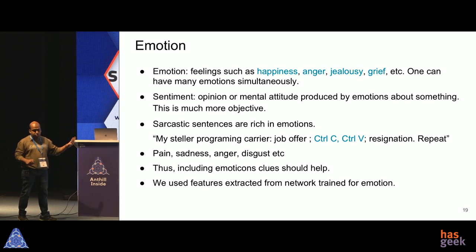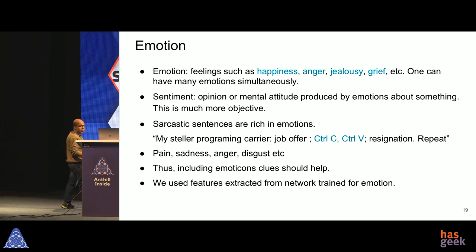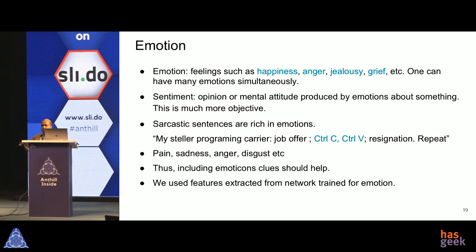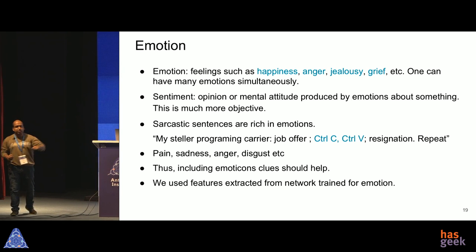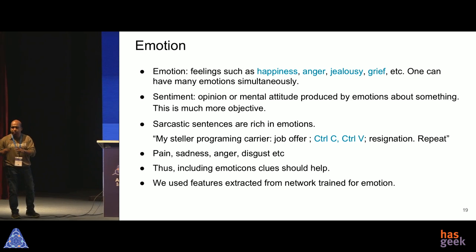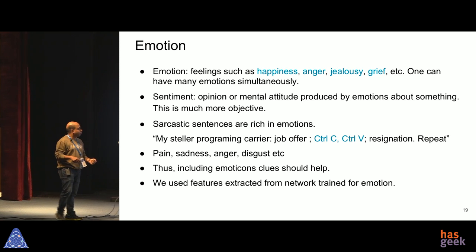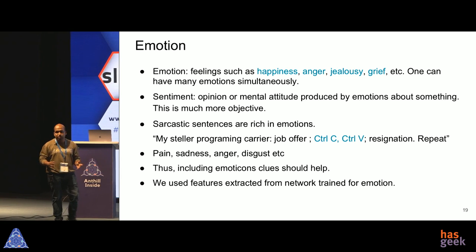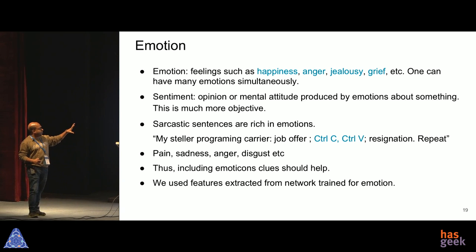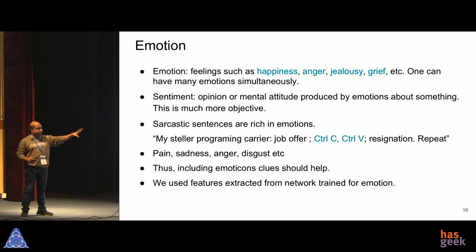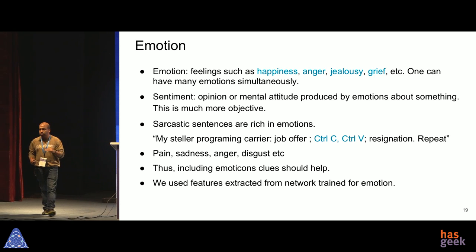The second clue is emotion — feelings like happiness, anger, jealousy, and grief. One can have many emotions simultaneously. Sentiment, on the other hand, is a more objective outcome: negative, neutral, or positive. Sarcastic sentences are rich in emotions. For example, 'My stellar programming life: job offer, Ctrl+C, Ctrl+V, resignation, repeat' — we all relate to it, but it carries pain, sadness, anger, and disgust. The idea was: can we use these emotion clues to help understand sarcasm? Similar to sentiment, we trained another CNN network to understand only the emotion part and feed features from there.